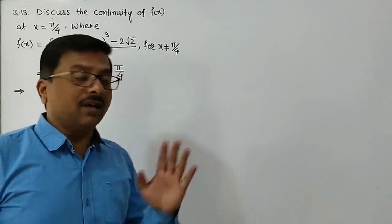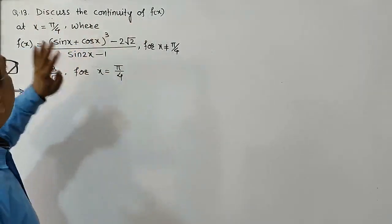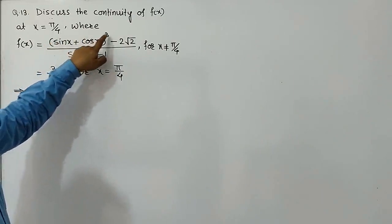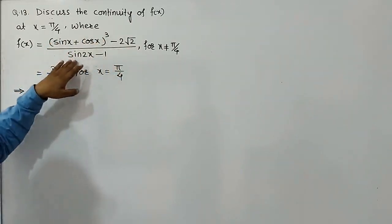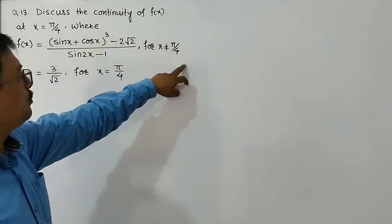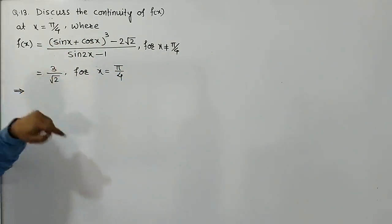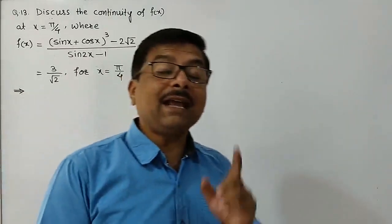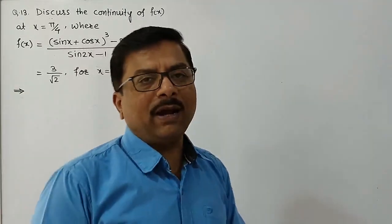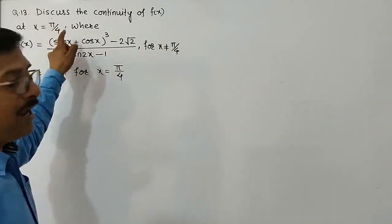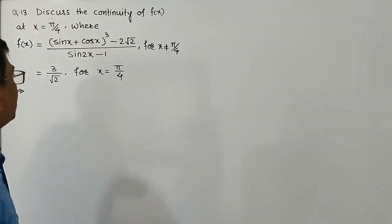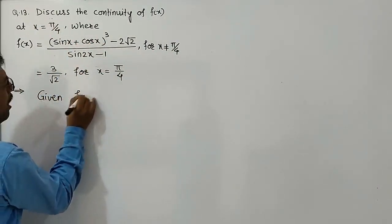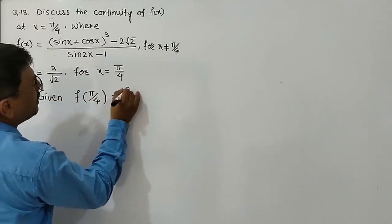Now question number 13: discuss the continuity of f(x) at x = π/4, where f(x) = (sin x + cos x)³ − 2√2 divided by (sin 2x − 1) for x ≠ π/4, and f(π/4) = 3/√2. We need to discuss continuity at one point, so we find the limit and compare with the given value. f(π/4) = 3/√2.